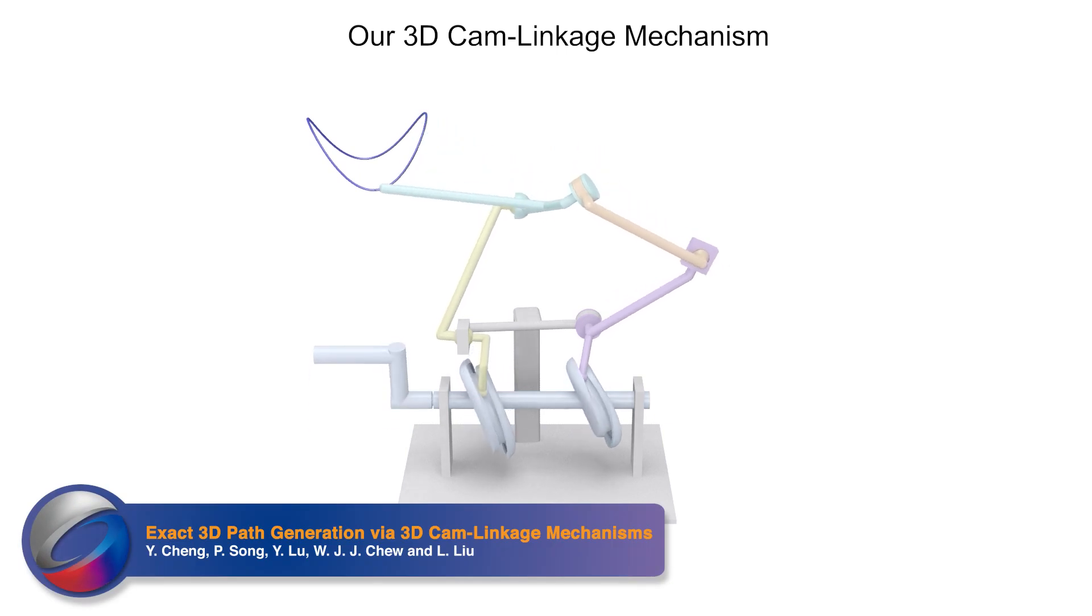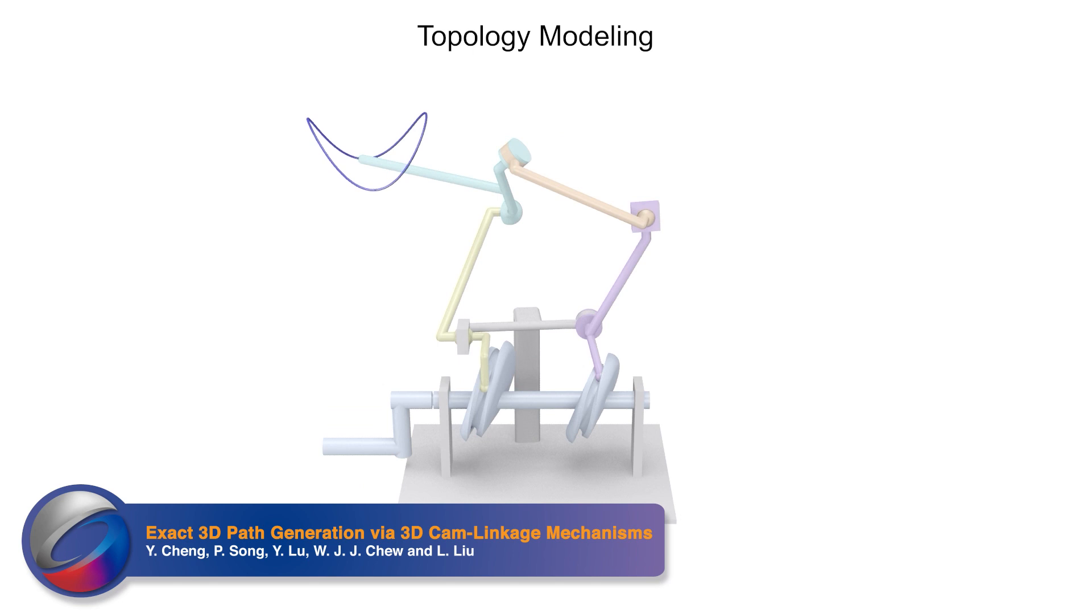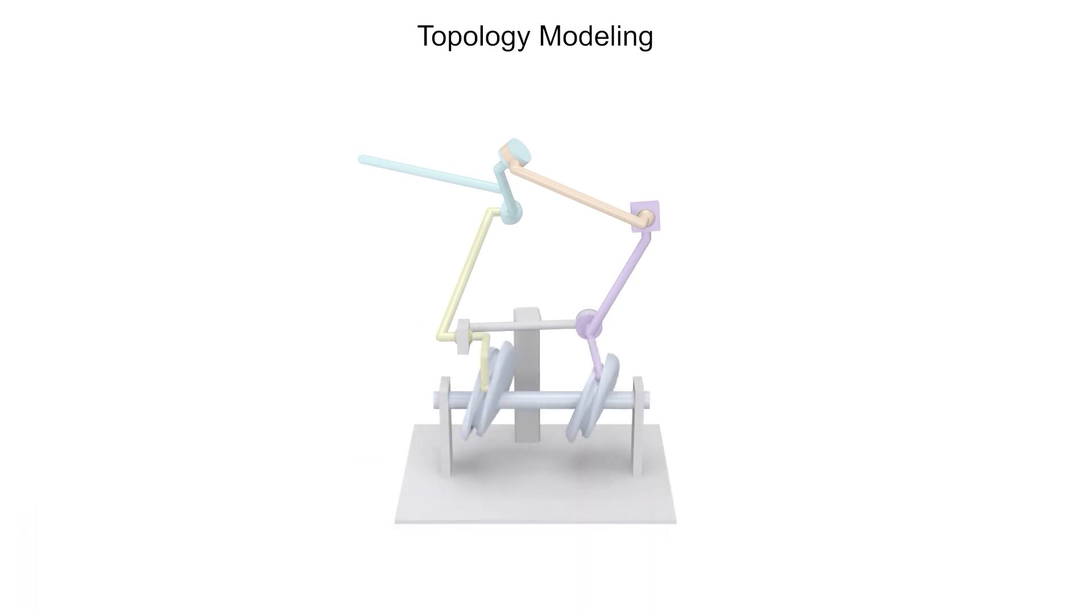Two cam followers drive a 5-bar spatial linkage. By turning the single actuator, the mechanism moves a point along a prescribed 3D path. To build the correct cams, the 3D path is input to the 5-bar linkage and used to determine the geometry of the cams.